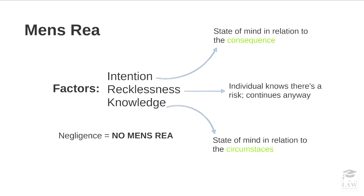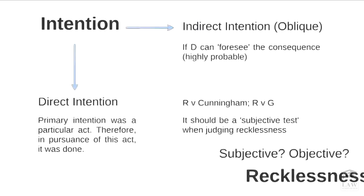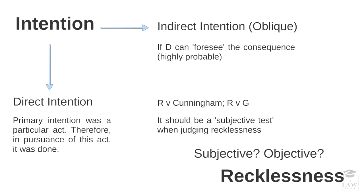When we consider intention, you can have either direct or indirect intention. A defendant might primarily intend for a particular act to happen — for example, A wishes to kill B, knows exactly what has to be done, plans it, and executes it. The intention of doing so is direct. Indirect intention or oblique intention, on the other hand, means that the defendant could have foreseen or foresaw the consequence of certain actions, while he may not have directly intended for that final act to occur, he was able to foresee it.